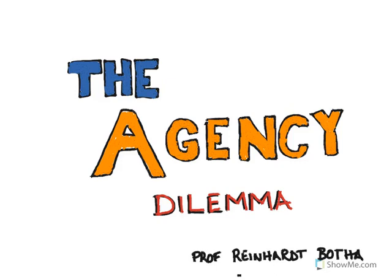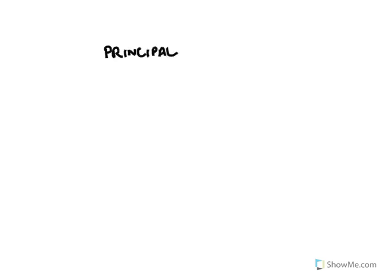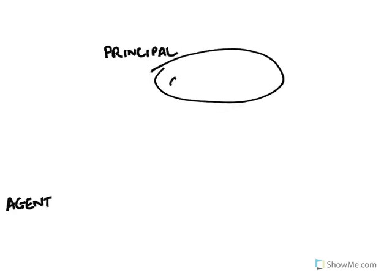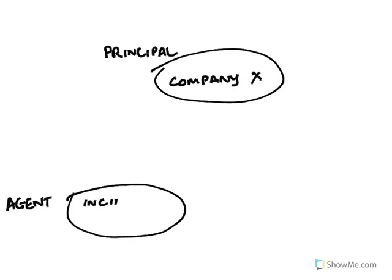We are going to talk about the agency dilemma. Core to the idea of agency theory is that one has a principle which employs an agent. By means of example, we can think of the principle as the company we are working with and the agent being a specific person in that company. In this case, the incident manager — or the help desk manager — acts on behalf of company X, and there will be at least an implicit and often an explicit arrangement about what would be good agency.